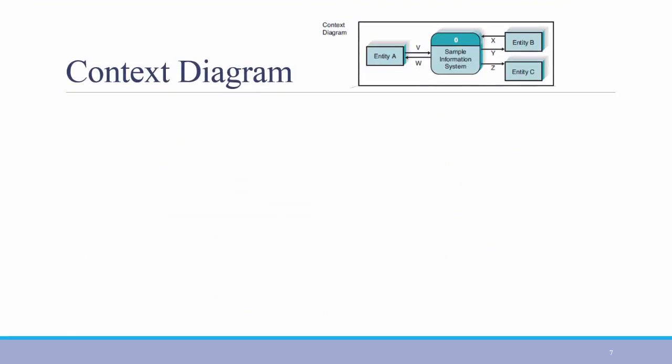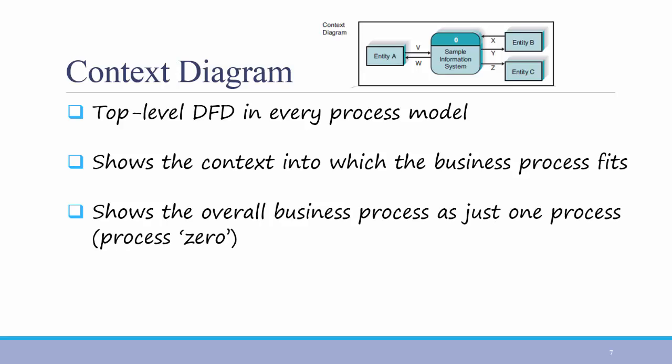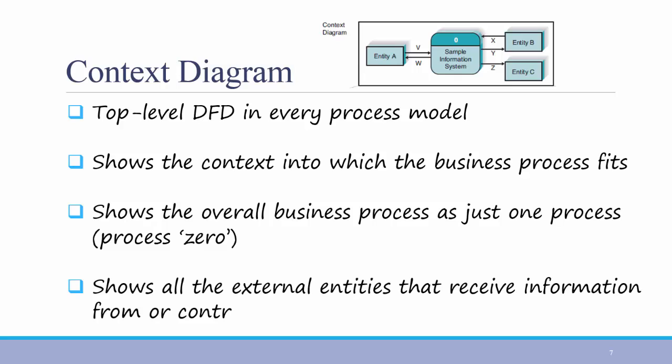The context diagram is the top level data flow diagram in every process model. You always include a context diagram. It shows the context to which the business process fits. It always shows a single overall business process as just one single process, which is numbered process 0. And it shows all the external entities that receive information from, or contribute information to, the system.